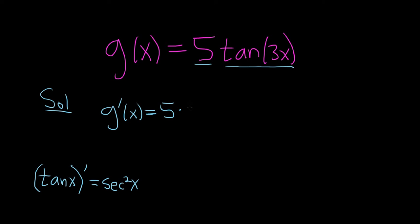Then you multiply by the derivative of tangent of 3x. So here we will use the chain rule. So it will be secant squared of 3x, and then times the derivative of the inside function. So the inside function is 3x and so its derivative is 3.